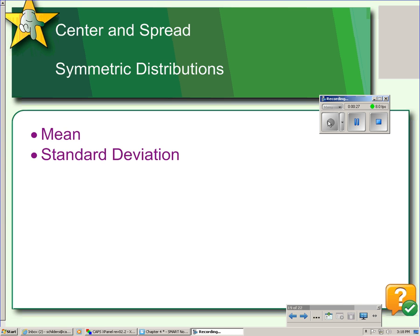However, when a distribution is roughly symmetric, we should use the mean to measure the center. The mean, as you know, is just an average. So to find the mean, you simply add up all the observations and divide by the sample size.